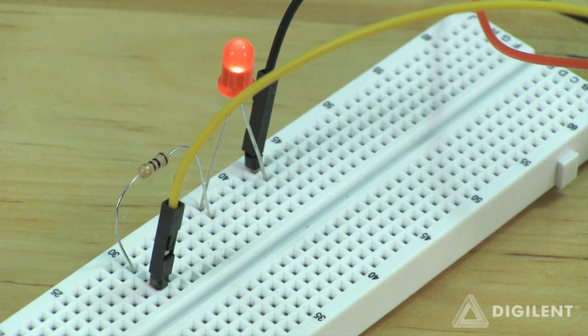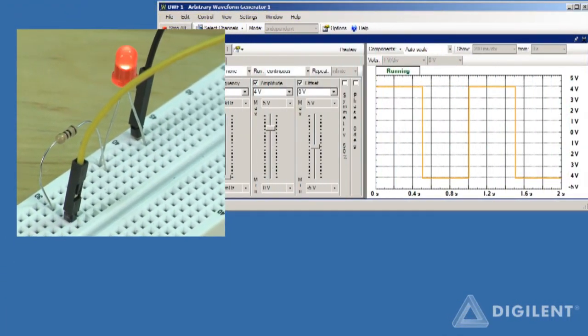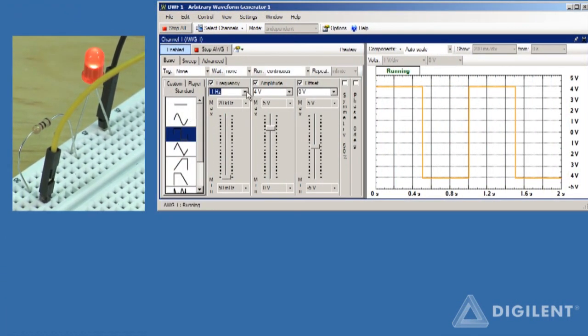I'd recommend that you play around with the controls and see what effect they have. For example, we can easily change the rate at which the diode flickers by changing the frequency of the applied square wave.